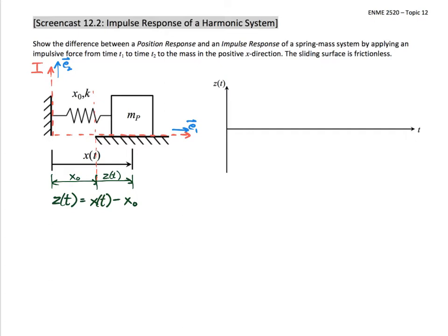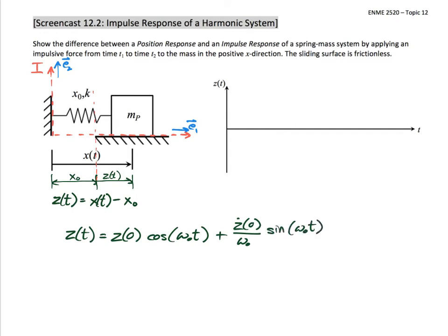As one final part to set up our exploration, we've already created an analytic solution. The solution for position z is equal to the initial position z at time zero, multiplied by cosine of omega-naught times t, plus the speed at time zero divided by omega-naught multiplied by sine of omega-naught times t. Here omega-naught is the natural frequency, defined by the square root of the spring constant k divided by the mass.